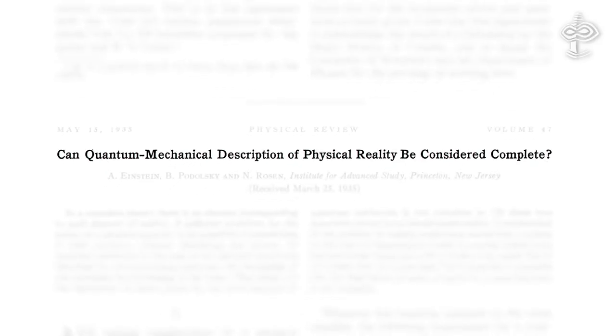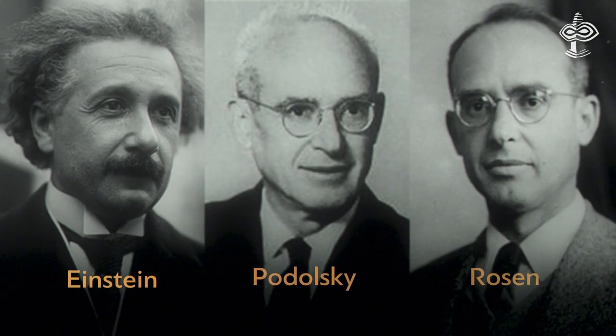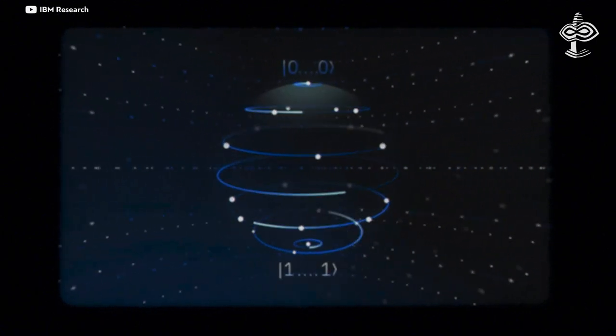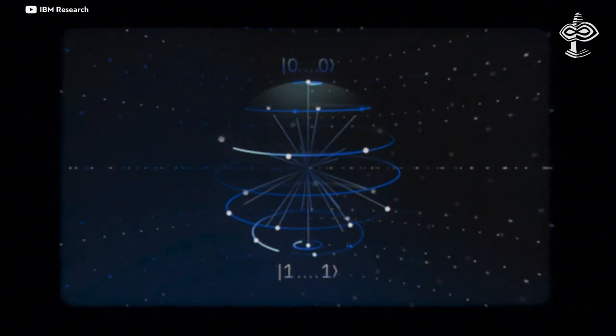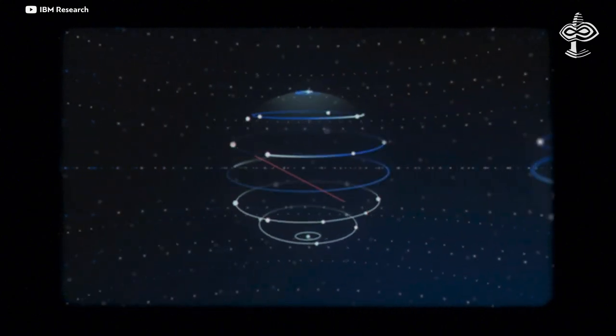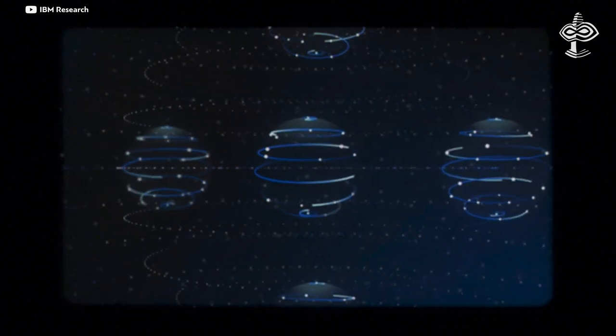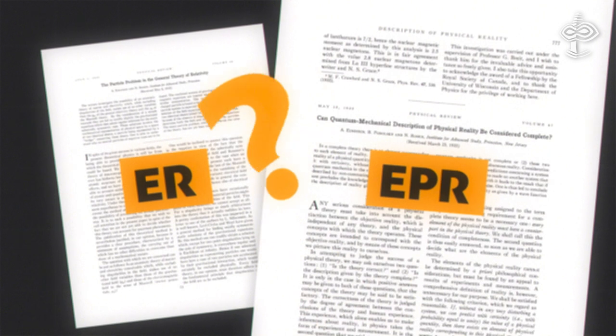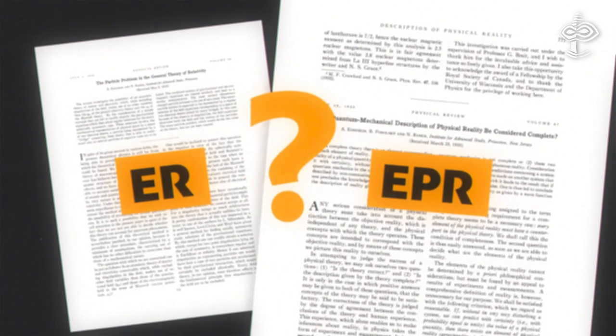That same year, another paper commonly referred to as EPR by Einstein, Podolsky, and Rosen was published. It was about quantum entanglement, or what Einstein called a 'spooky action at a distance,' something he was not happy with. Entanglement is a property of subatomic particles to act as a twin even if you take them apart to the different edges of the universe. They hold information, and if you measure the one, you know what the other would be.